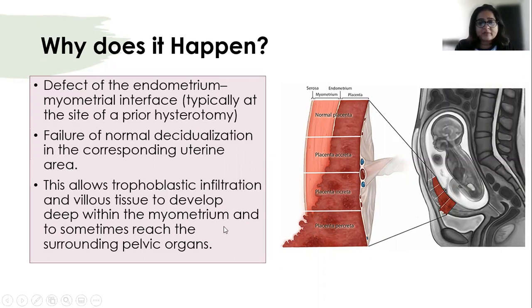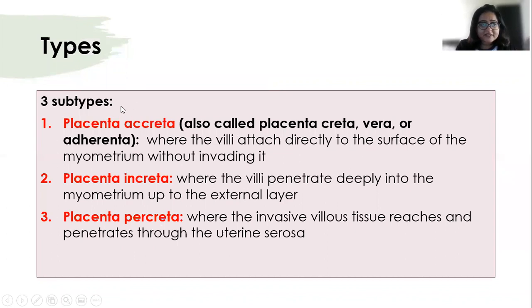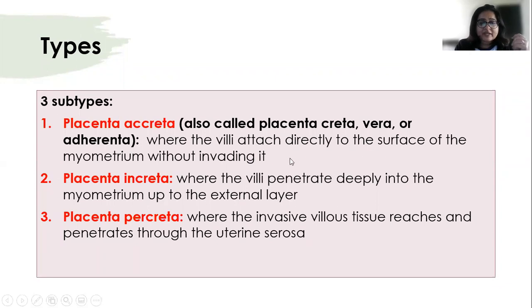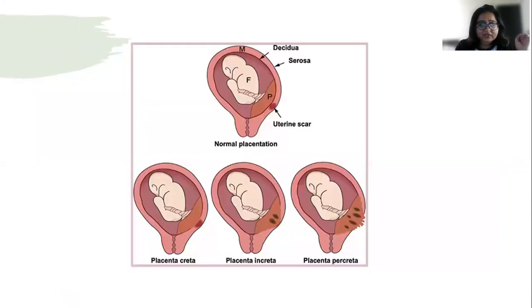There is failure of normal decidualization in the corresponding uterine area, which allows trophoblastic infiltration and villous invasion deep within the myometrium, sometimes reaching surrounding pelvic organs. Most commonly it can invade the bladder, because the most significant risk factor is a previous anterior cesarean section, and the structure anterior to the uterus is the bladder. In accreta vera, villi attach the surface of the myometrium without invading it; in increta, villi penetrate deeply; in percreta, it completely perforates through the uterine serosa into adjacent structures.